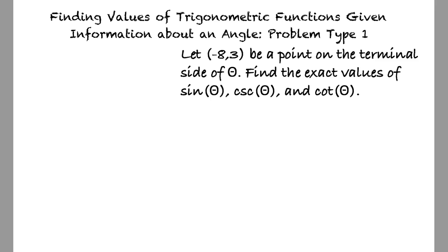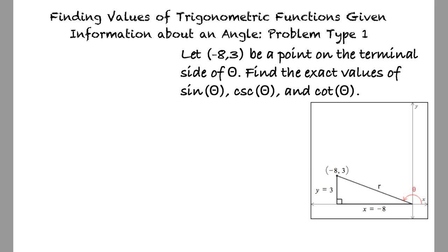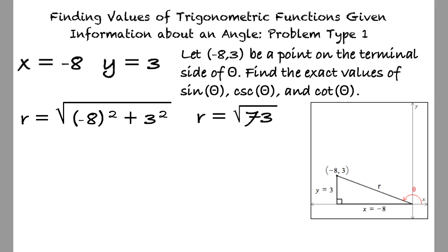We can start by drawing a triangle where the adjacent side has length -8 in the x direction and the opposite side has length 3 in the y direction, right? Exactly. We substitute these values into the Pythagorean theorem and solve for r. r equals the square root of (-8)² plus 3², which simplifies to √73.